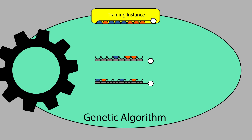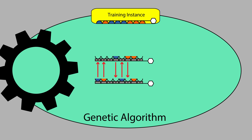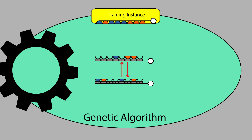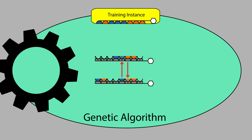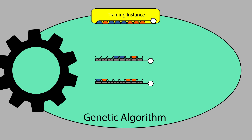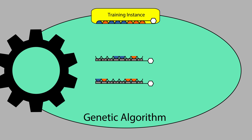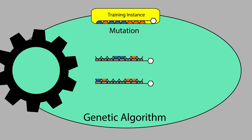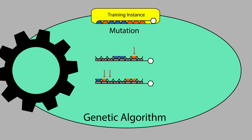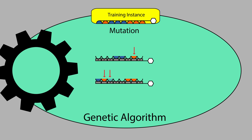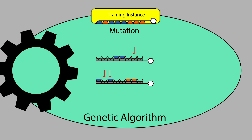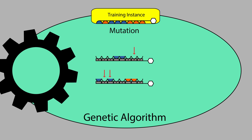Crossover looks for attributes that are specified in one parent but not the other, and for each, flips a coin and decides whether to swap specification and generalization. Following crossover, each offspring rule has the potential to be modified further by the mutation operator. Each attribute in the rule has some random chance of swapping from specified to generalized, or vice versa, thus adding new variation to the offspring rules.